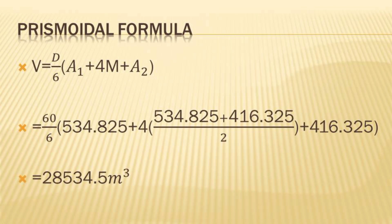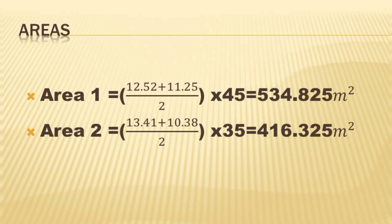The volume of the prismoid is given by V equals D over 6 into brackets, our first area plus 4 times the mean of those areas plus our area 2, close bracket. Where A1 and A2 are the areas of the two end faces, distance D apart, M is the area of the section midway between.